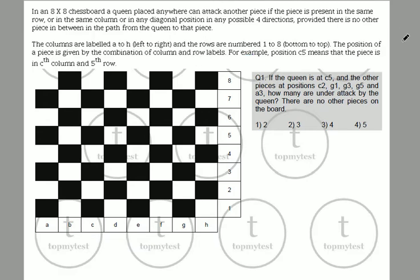It says: in an 8×8 chess board, a queen is placed anywhere. A queen placed anywhere can attack a piece if the piece is present in the same row, or in the same column, or in any diagonal position in any of the four directions, provided there are no pieces in between in the path from the queen to that piece.